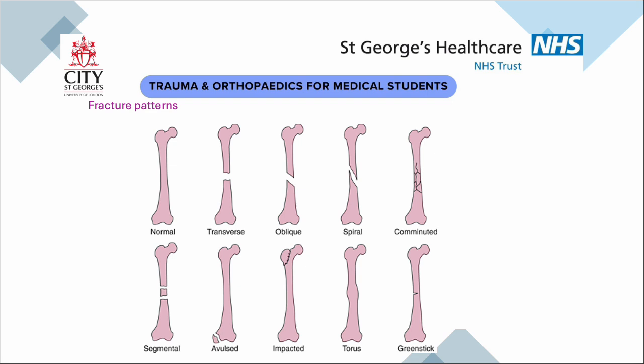A segmental fracture is where you have a bit of the tube in the middle and a bit at each end. An avulsion fracture is more common in younger people where you have a strong ligament attached to the bone and the failure point is the bone rather than the ligament. The opposite is an impaction fracture where there is effectively a crush injury into the bone and it gets driven in. The torus and greenstick fractures are incomplete fractures that are classically paediatric.